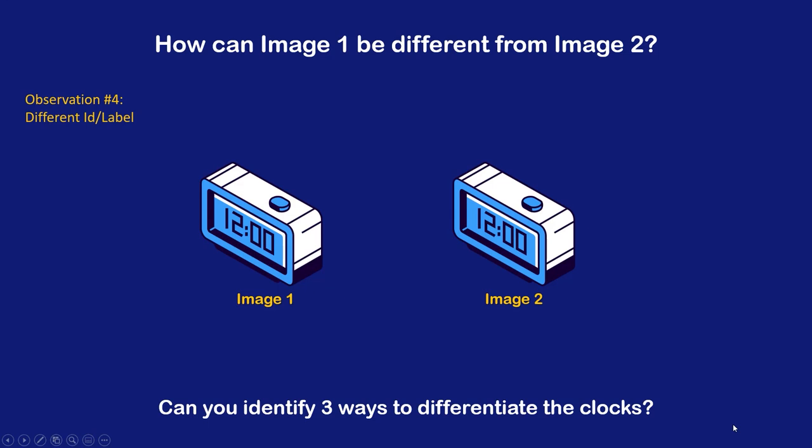Observation four — as a bonus, a fourth way to differentiate the images is to identify that they are labeled differently, such as image 1 and image 2. Are there more possibilities? Yes.